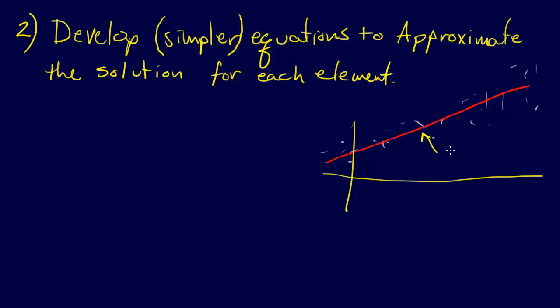What we did was we assumed that this function took the form alpha naught x to the 0, which is 1, plus alpha 1 x to the 1, so we just have alpha naught plus alpha 1 times x, and that's our equation for this line. Then we could define some error at each point i. This approximating function we called y hat.